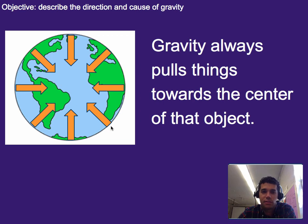But if you said down, then the person over here would be pulled this way. So essentially it'd be pulled out like that. That doesn't really make sense. So the more accurate way to say it is gravity always pulls things towards the center of that object.